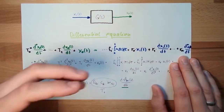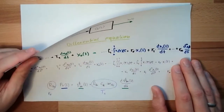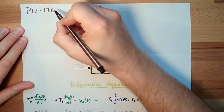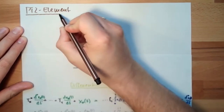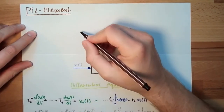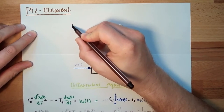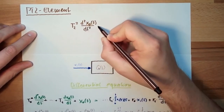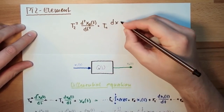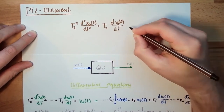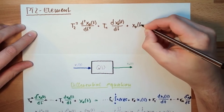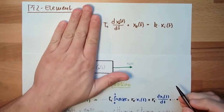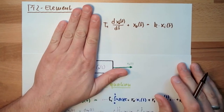Here we had an example of a PT1 element, as it turned out. And how does the PT2 element look like? So let's write here: PT2 element. This is actually the element of second order — delay element second order. Here we had T2 squared with the second derivation of the output, the first derivation of the output, and the output equals k multiplied by xi(t). This was the PT1 element; this is the PT2 element.